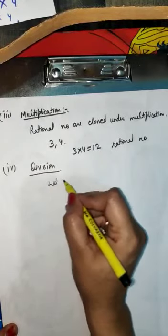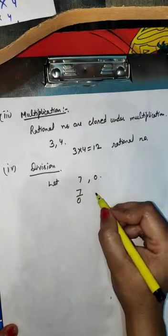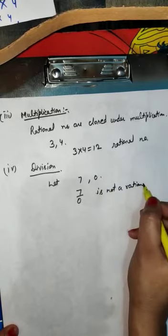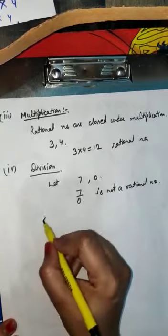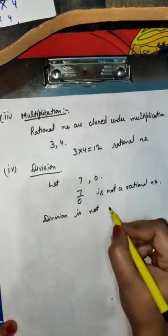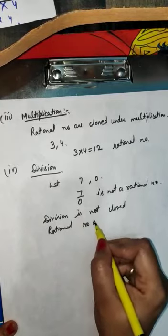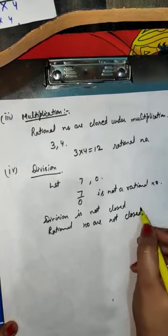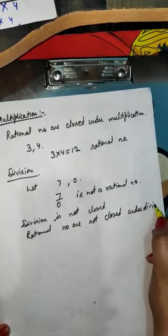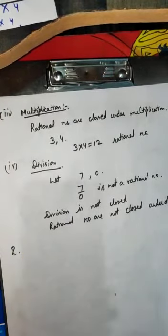Let us take two numbers — first is 7 and second is 0. If we divide 7 by 0, then this is not a rational number. This implies division is not closed, and rational numbers are not closed under division.